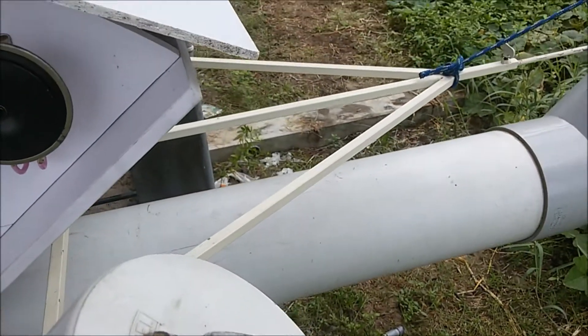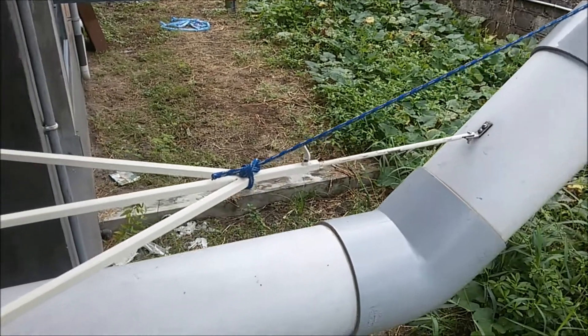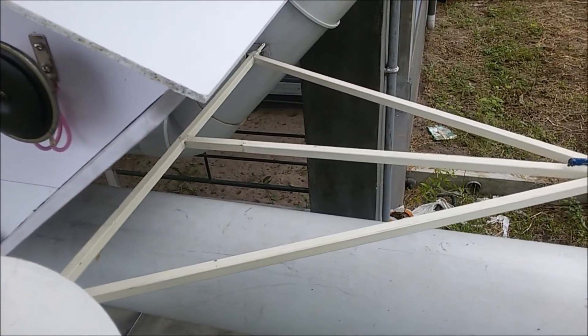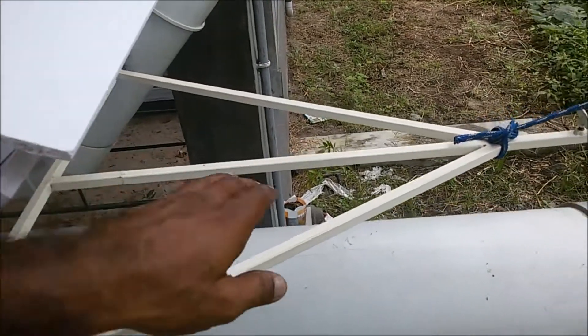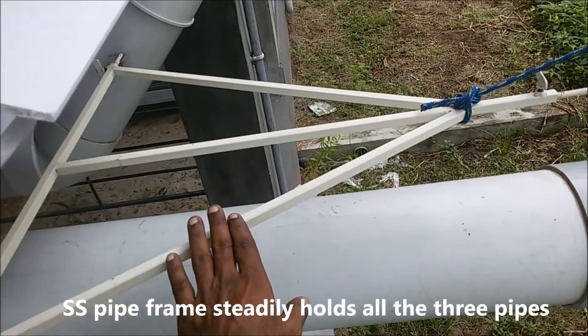So that one is the third central pipe, which basically at the stern has the jet drive. And this is a frame which holds all the three pipes steady.